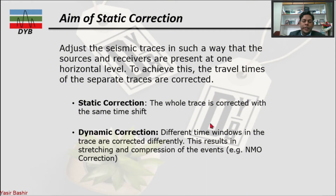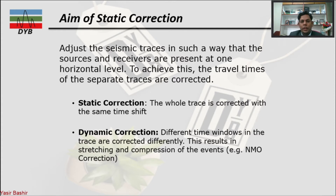Now we understand what static correction is and why we need to apply it. The aim of static correction is to adjust the seismic traces so that the source and receivers are present at a horizontal level. To achieve this, travel times of separate traces are corrected. In static correction, the whole trace is corrected with the same time shift, whereas in dynamic correction — such as NMO — different time windows within a trace are corrected differently.